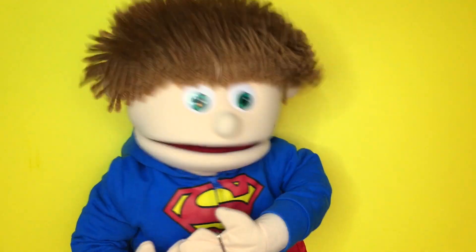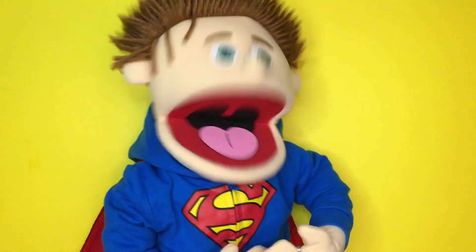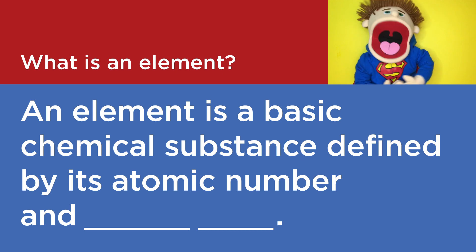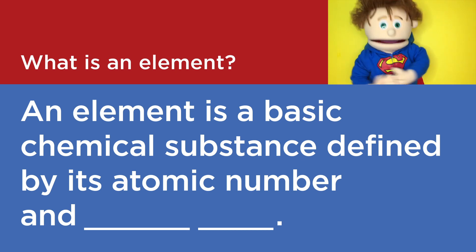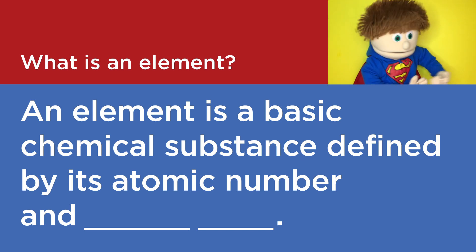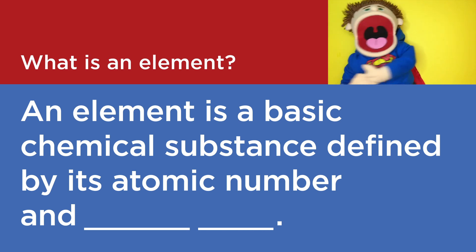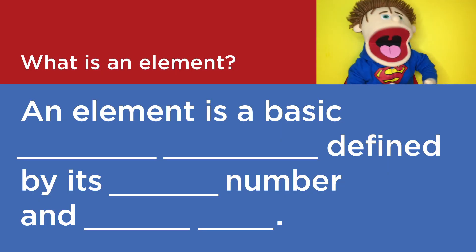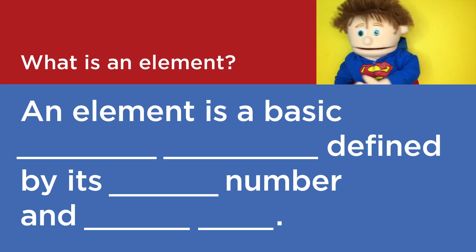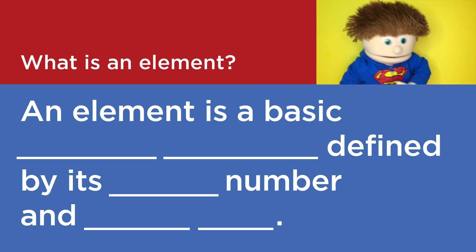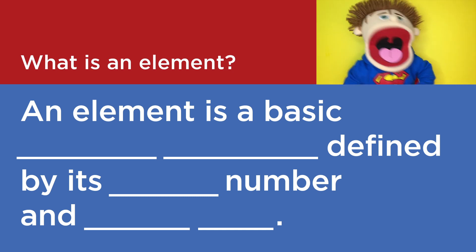Do you think you have that memorized? I'm going to erase a few words and see if you can fill them in. Here we go. What is an element? An element is a basic chemical substance defined by its atomic number and atomic mass. I'm going to take away a few more words. Let's try that again. What is an element? An element is a basic chemical substance defined by its atomic number and atomic mass.